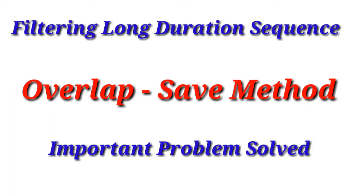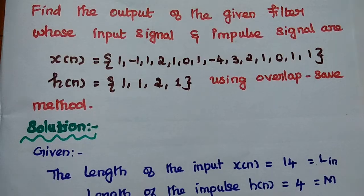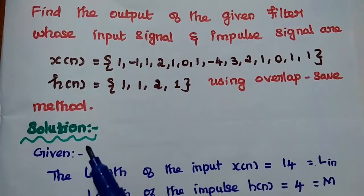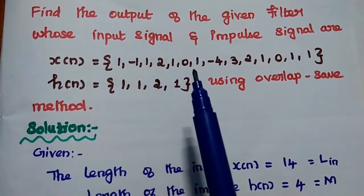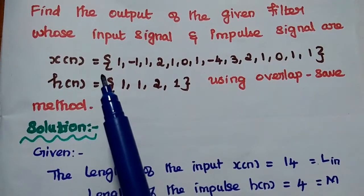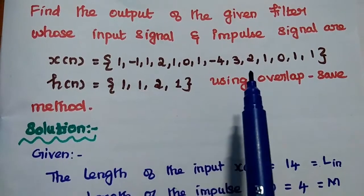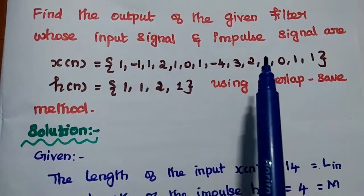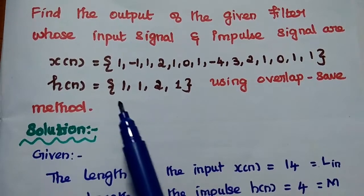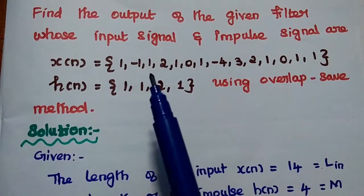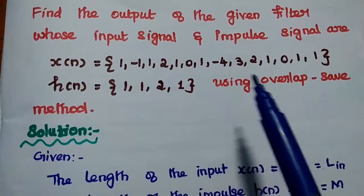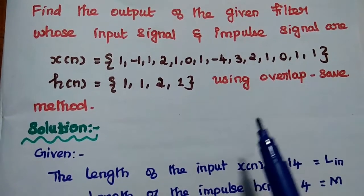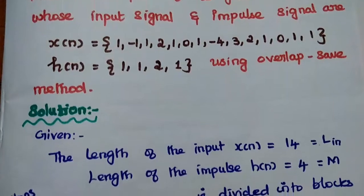Dear students, now we are going to solve an important problem using the overlap save method. The given problem is to find the output of a filter whose input signal x(n) is a long duration sequence and impulse response h(n) is equal to {1, 1, 2, 1}. We are going to find the output of this filter using the overlap save method. Let's solve this problem.